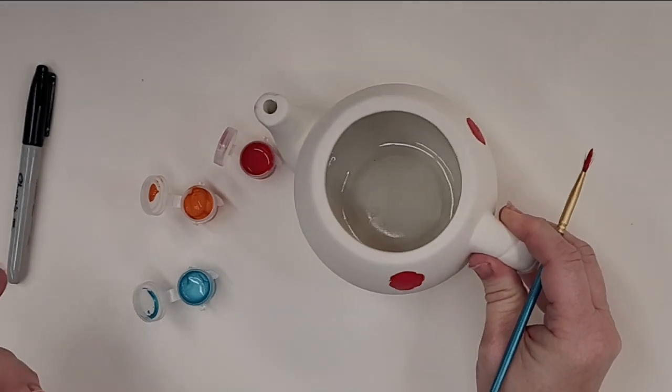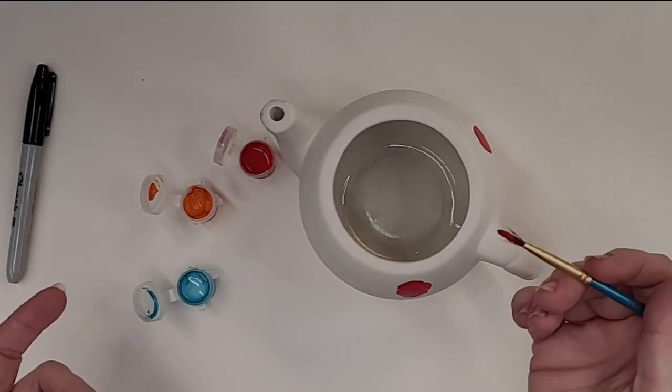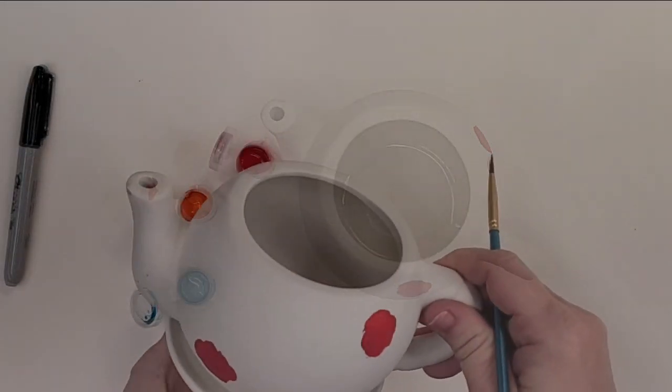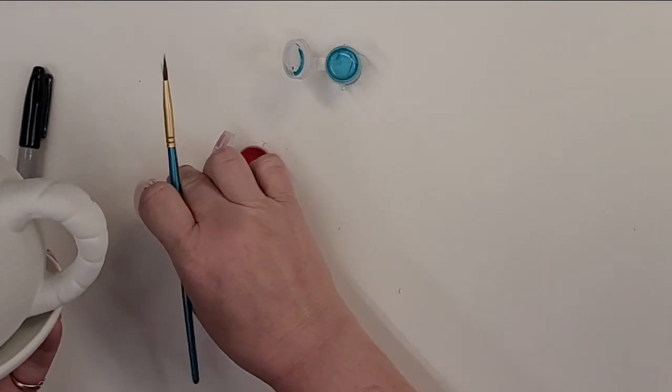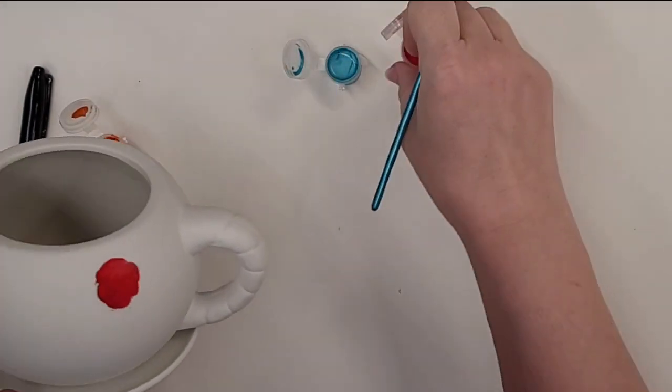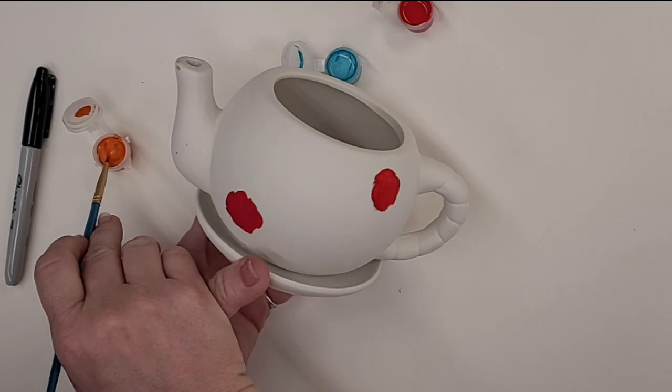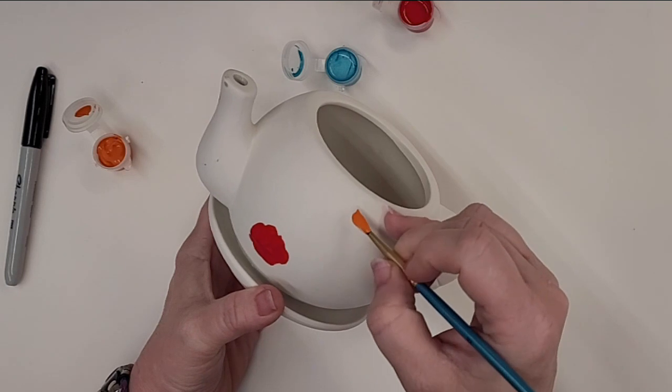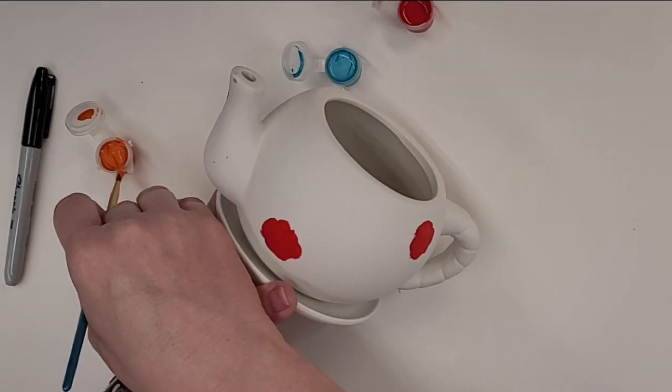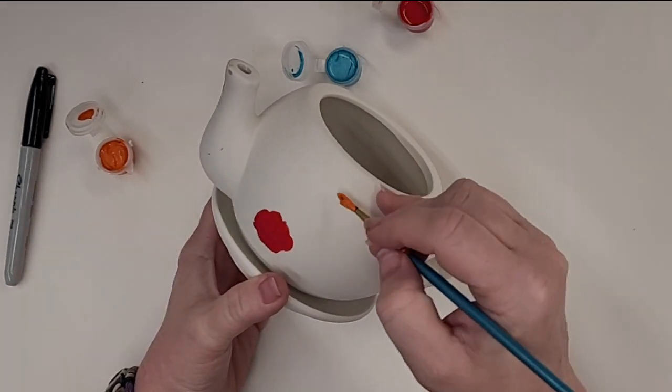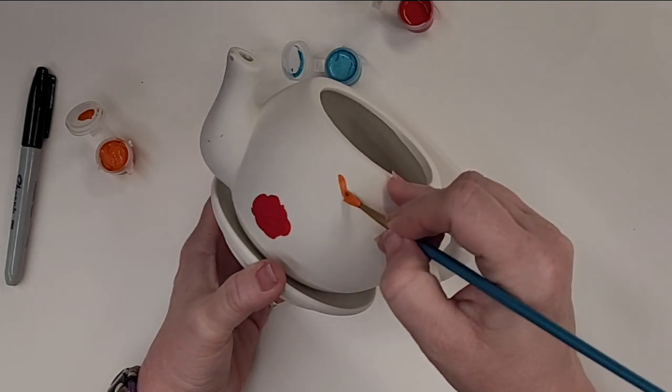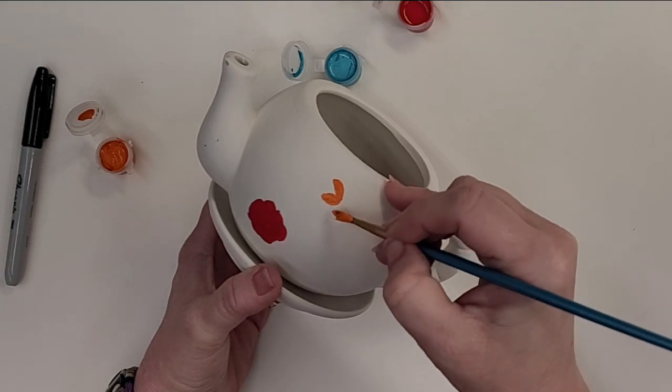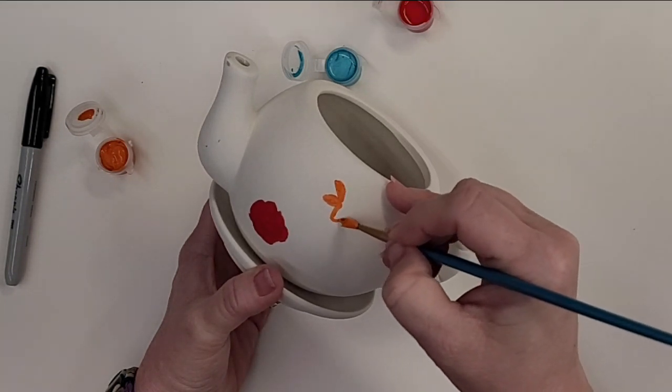All right. So I'm going to rinse out my brush with some water and I'm going to do a different style of flower on my flower pot. So I think I'm going to switch to the orange. And for this style, I'm going to do an actual kind that has petals. So I'm going to get a little bit of my paint and I'm just going to do kind of teardrop shapes all coming to the center.